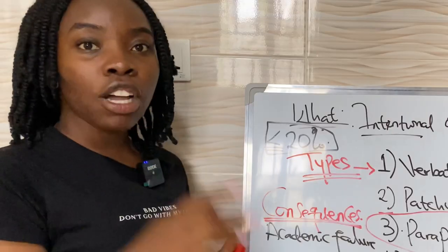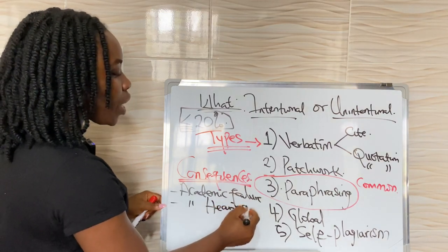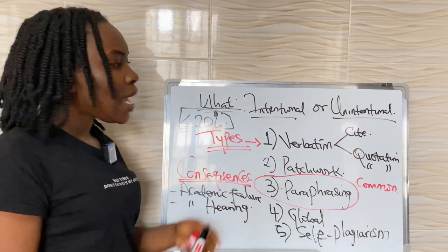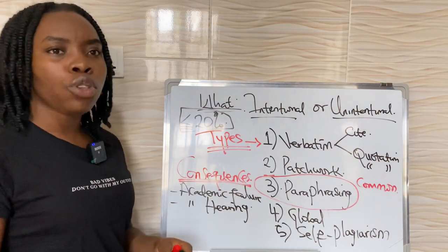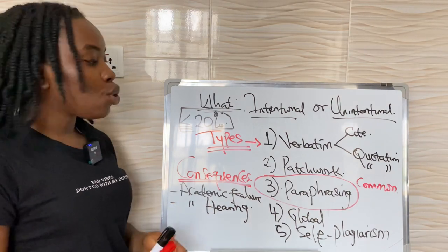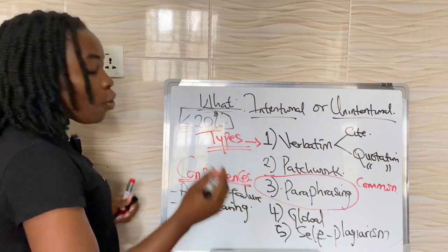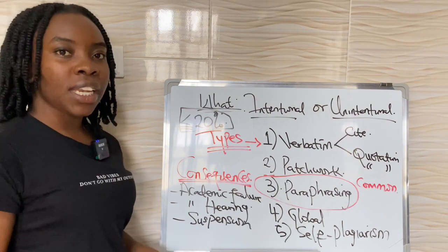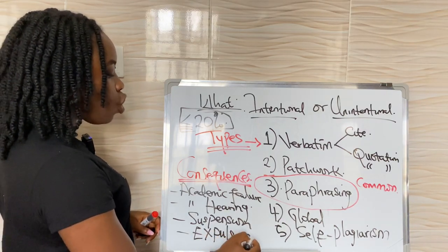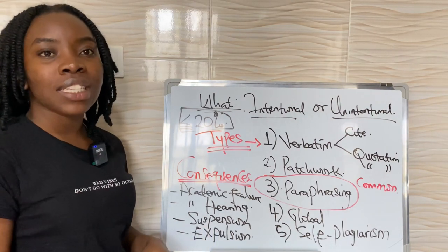The second consequence is an academic hearing — where you are called in by your lecturers or the head of department, sat down in front of a panel, and asked to explain the plagiarism in your work. I know of someone who recently had to go through an academic hearing in the UK because her work had a large amount of plagiarism. Another severe consequence is suspension from school for a certain period of time. And the last, which is actually the worst, is expulsion — if you are always plagiarizing and not giving credit in an academic setting, expulsion could be a consequence.